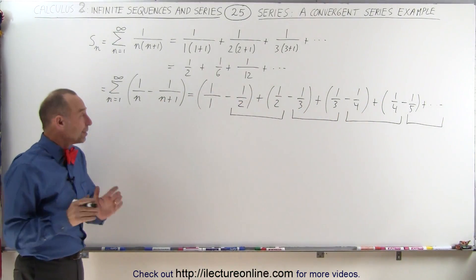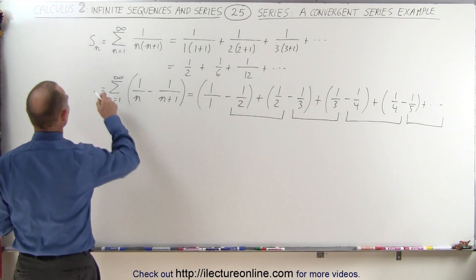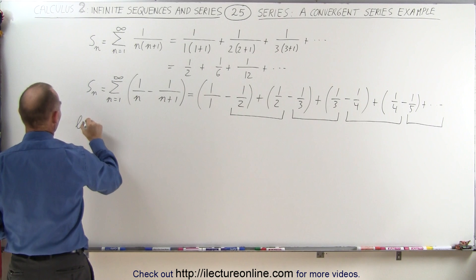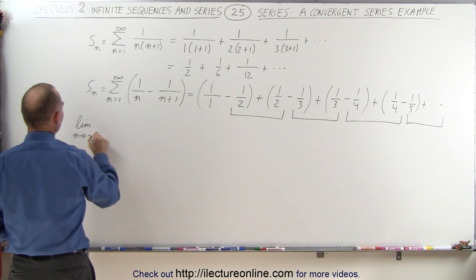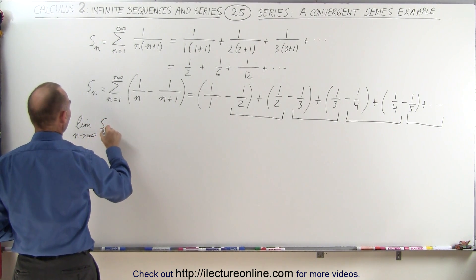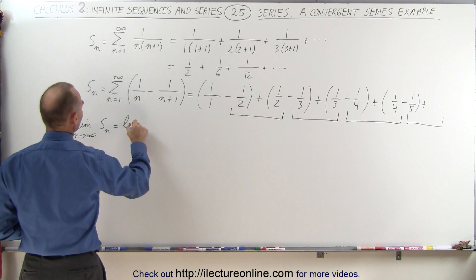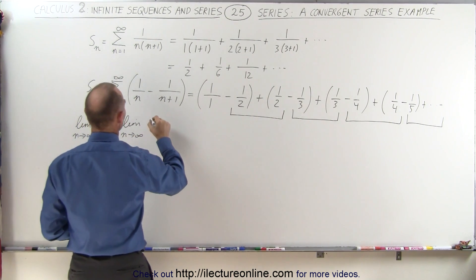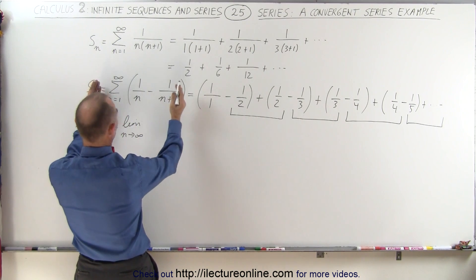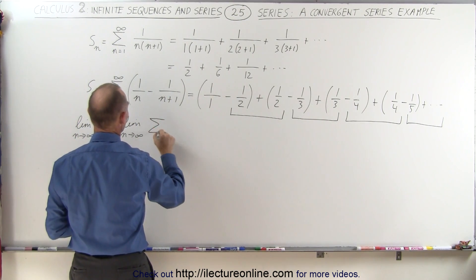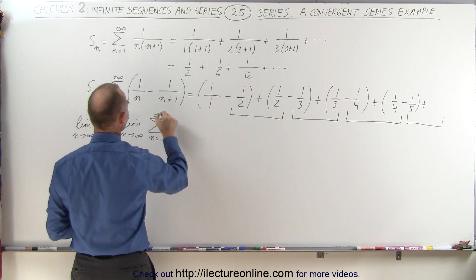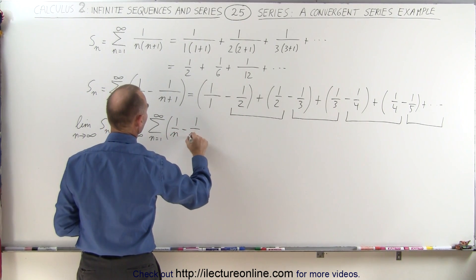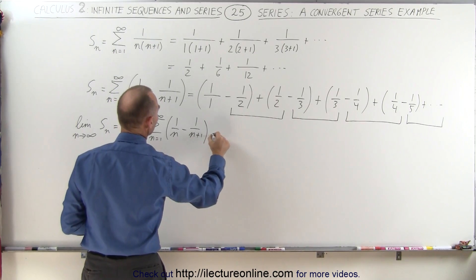So if we now take the limit of this, so what I'm going to do is since this is S sub n, I'm going to take the limit as n approaches infinity of the sum, which is equal to the limit as n approaches infinity of the sum. So S sub n can be written as the infinite sum from n equals 1 to infinity of 1 over n minus 1 over n plus 1 is equal to...